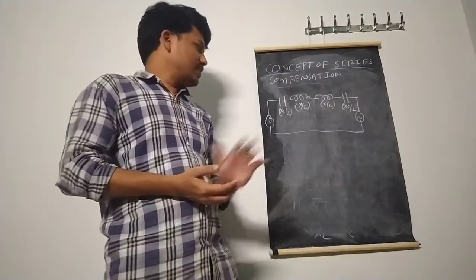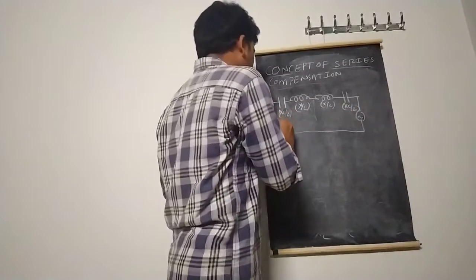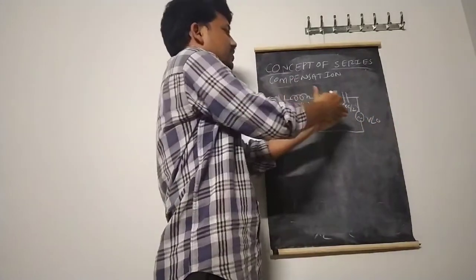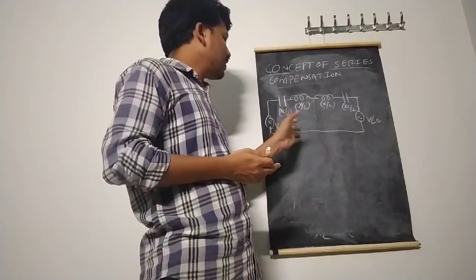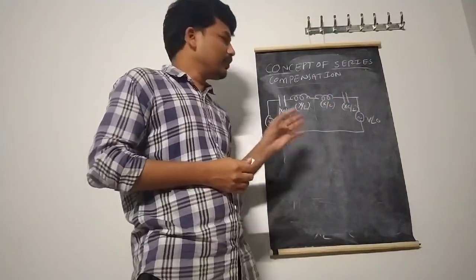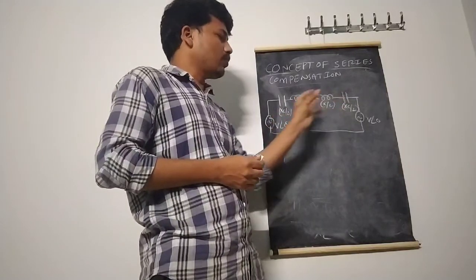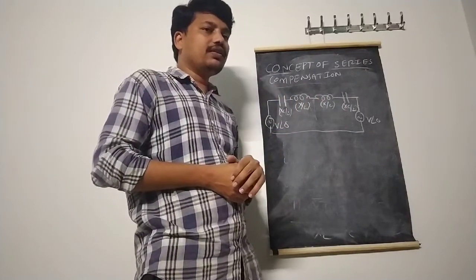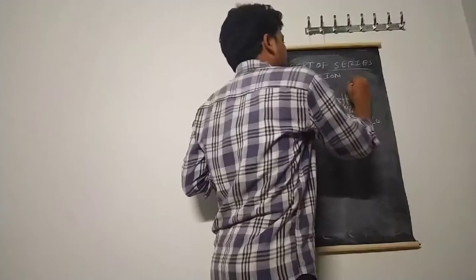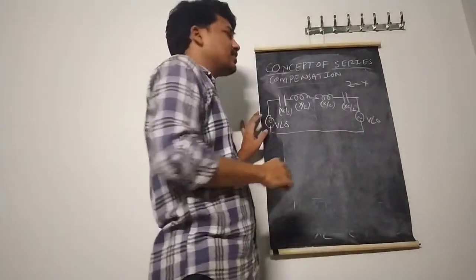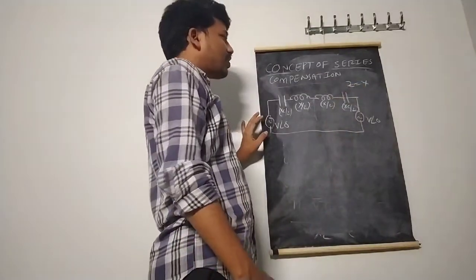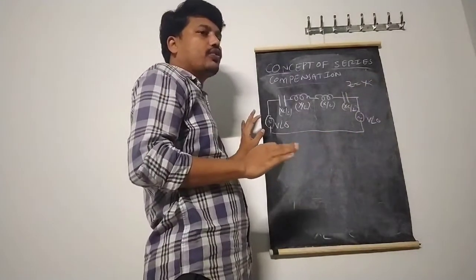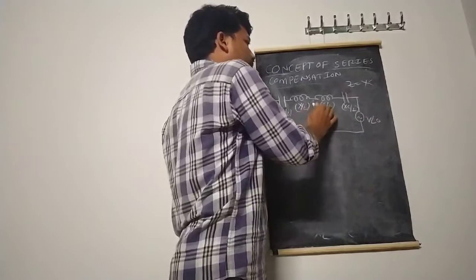Let us assume a two-machine system from generation side: one end has voltage V∠δ and the other has V∠0. In between the two machines, the transmission line offers some impedance. In a long transmission line, the impedance Z is essentially X only. In series compensation, X is divided into two parts: X/2 and X/2.